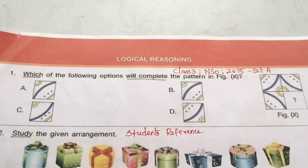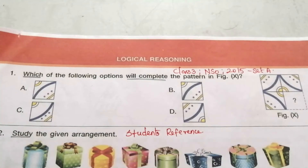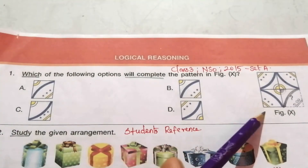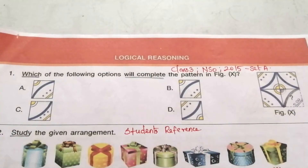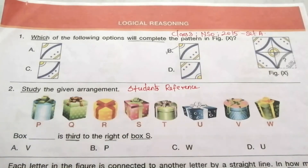First topic is Logical Reasoning. Question 1: Which of the following options will complete the pattern in Figure X? Look at the given Figure X and the four options. To find the answer, complete the pattern — we get a shape similar to option B. So B is our answer.